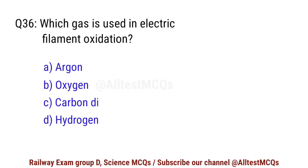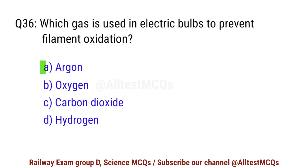Question No. 36. Which gas is used in electric bulbs to prevent filament oxidation? Right option is A. Argon.